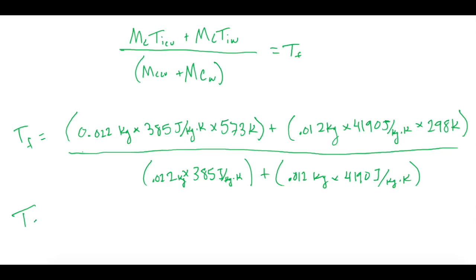When plugging that in, T final is now equal to 302.56 kelvin, but we want it in degrees celsius, so we minus 273 and we get 29.56 degrees celsius, or 30 degrees celsius.